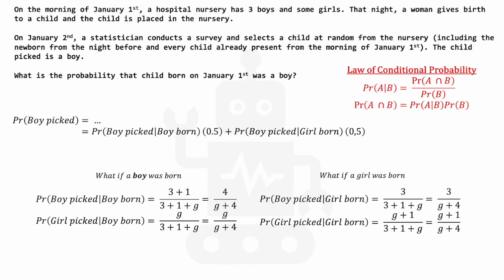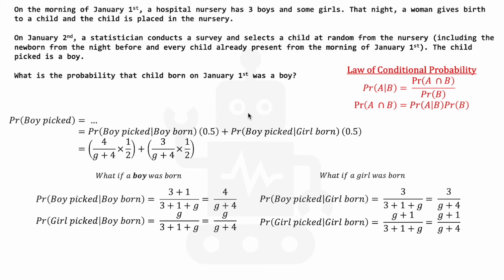For completeness, the probability that a girl was picked given that a girl was born equals g plus 1 — the unknown girls plus the new girl — divided by 3 plus 1 plus g, which equals g plus 1 over g plus 4. Now, filling in the blanks: the first term is P(boy picked | boy born) times 0.5, which is 4 over g plus 4 times one half. The right term is P(boy picked | girl born) times 0.5, which is 3 over g plus 4 times one half. Running through the calculation, we get 3.5 over g plus 4.